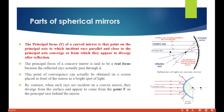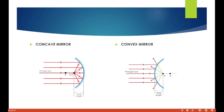In contrast, for the convex mirror the rays diverge from the surface and appear to come from a point F on the principal axis behind the mirror — that is virtual. The principal focus for the concave or converging mirror is real, while for the convex mirror it is virtual. Concave is converging; convex is diverging.